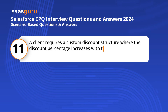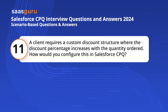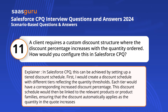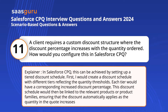Question 11. A client requires a custom discount structure where the discount percentage increases with the quantity ordered. How would you configure this in Salesforce CPQ? This can be achieved by setting up a tiered discount schedule. I would create a discount schedule with different tiers reflecting the quantity thresholds, each with a corresponding increased discount percentage. This discount schedule would then be linked to the relevant products or product families, ensuring that the discount automatically applies as the quantity in the quote increases.